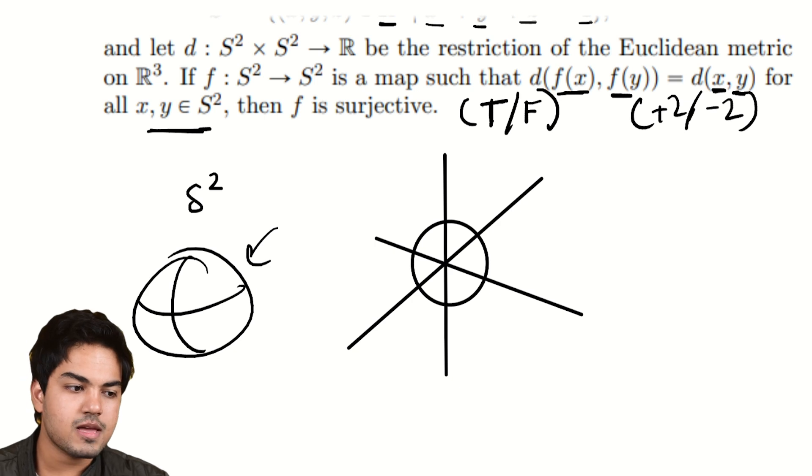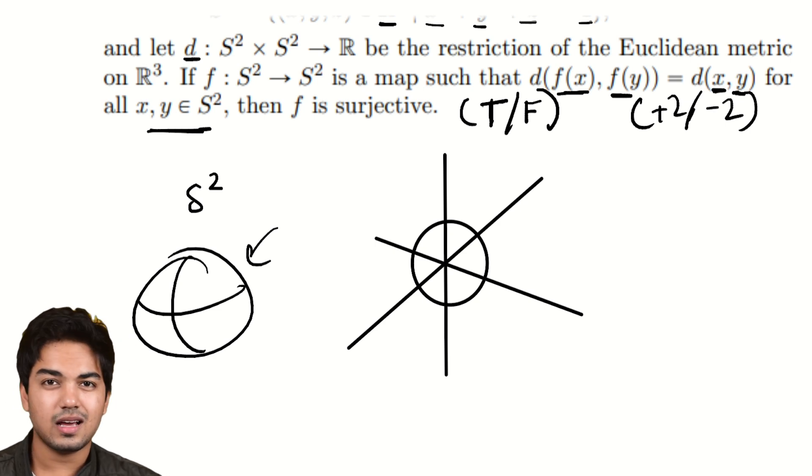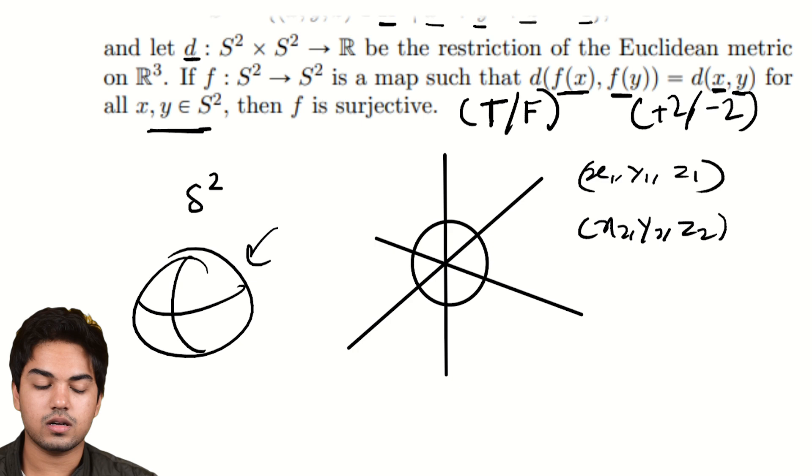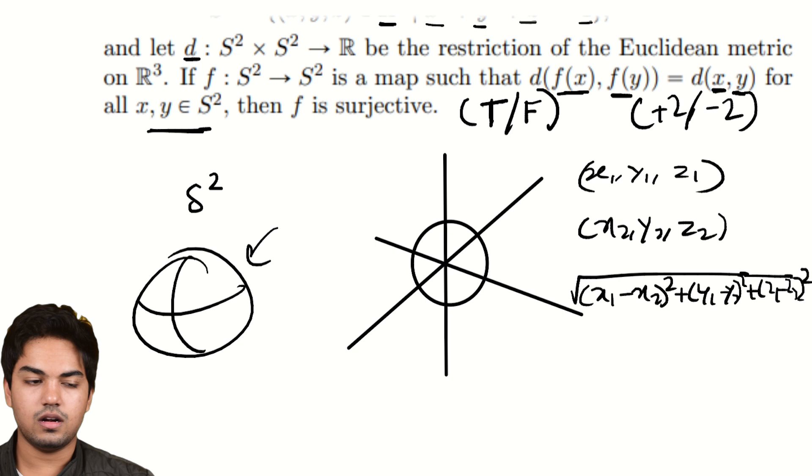So you have the surface of the sphere and you have d, which is really just a standard for distance. Metric just means distance. It's a measure of the distance of two points. And the Euclidean metric is the standard distance that you know, which is just the distance between (x₁, y₁, z₁) and (x₂, y₂, z₂): the square root of (x₁ - x₂)² + (y₁ - y₂)² + (z₁ - z₂)². Standard, nothing weird.